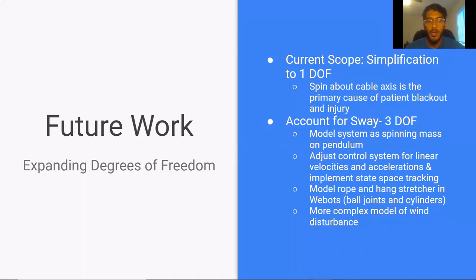One main area of future work would be to expand our system to 3 degrees of freedom. Currently, we simplified our system to 1 degree of freedom, which is spin about the cable axis. We focused on this for the scope of the project because spin is the main cause of patient blackout and injury. In order to account for the sway of the stretcher system, we would need to model it as a spinning mass on a pendulum. This would involve adjusting our control for linear velocities and accelerations, as well as implementing state-space tracking to control actuation, since you are removing many of our constraints. We would also need to model the rope and hanging stretcher in WEBOTs, and have a more complex wind disturbance model than simplifying to only external torques.